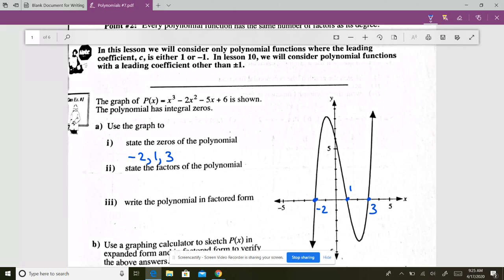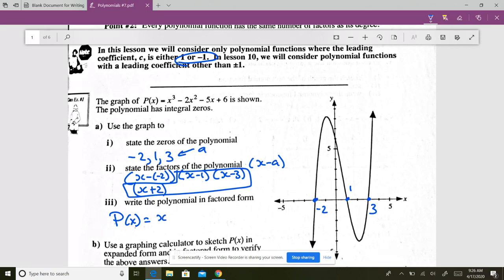The factors, that's where you write the brackets. It's always x minus a when you write a factor, a being the zeros. So in this case it would be x minus negative 2, which is actually just x plus 2, x minus 1, and x minus 3.